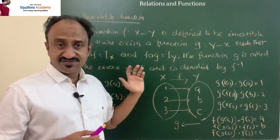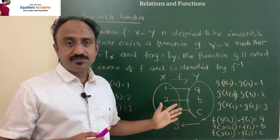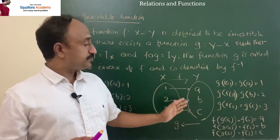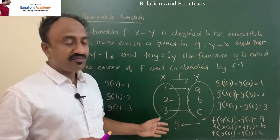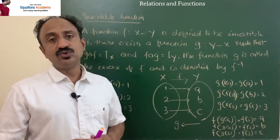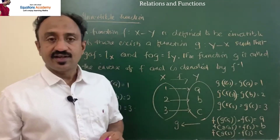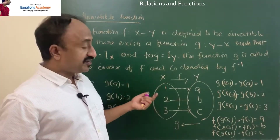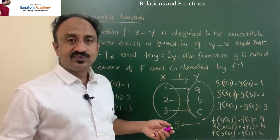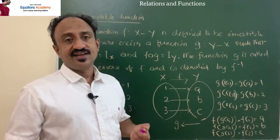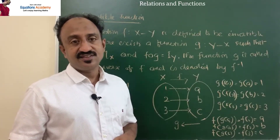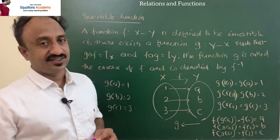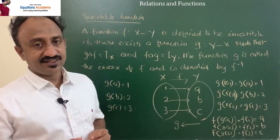If f is invertible, then f must be one-one and onto. And if f is one-one and onto, then f must be invertible.